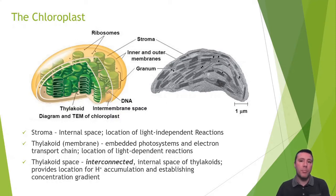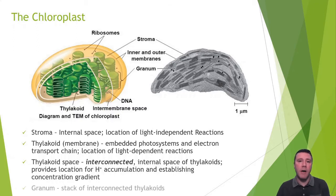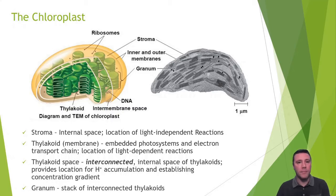The thylakoid space provides a location for a concentration gradient of hydrogen ions, also known as protons, to be established. And finally, a granum — grana is the plural — is a stack of thylakoids.